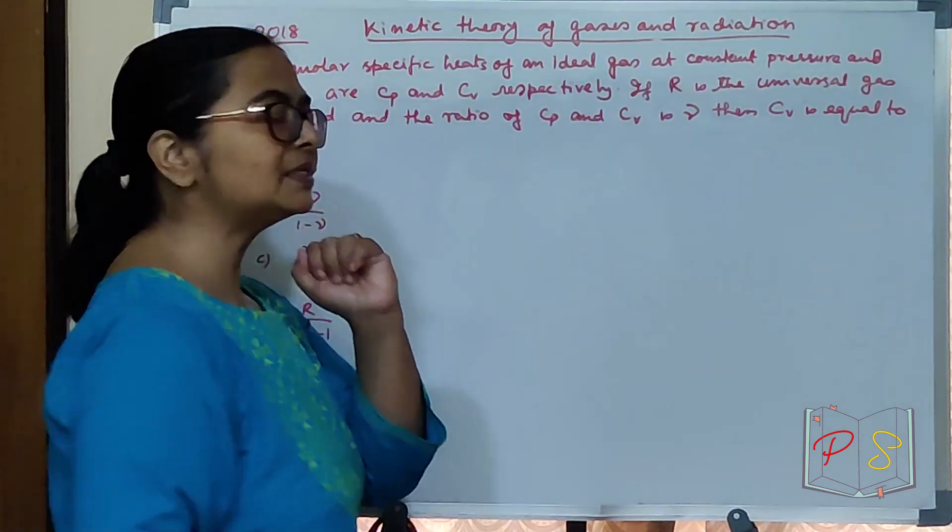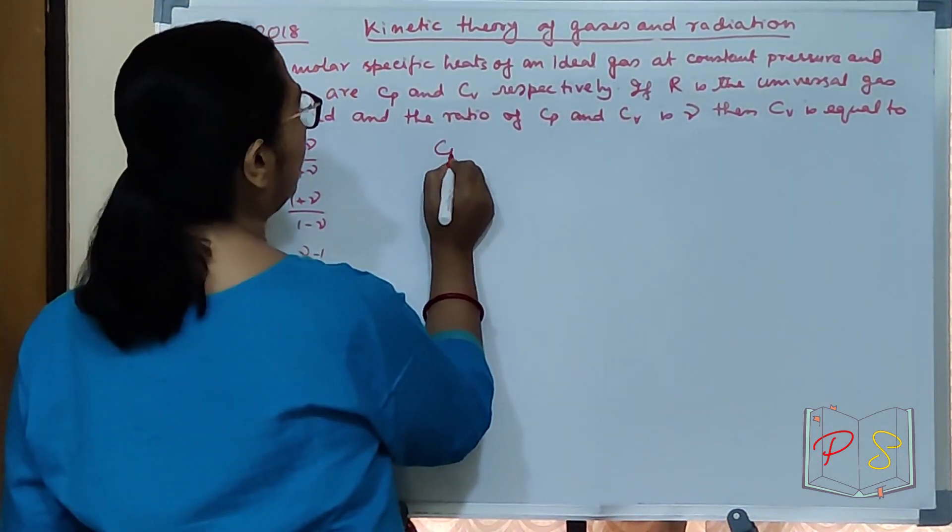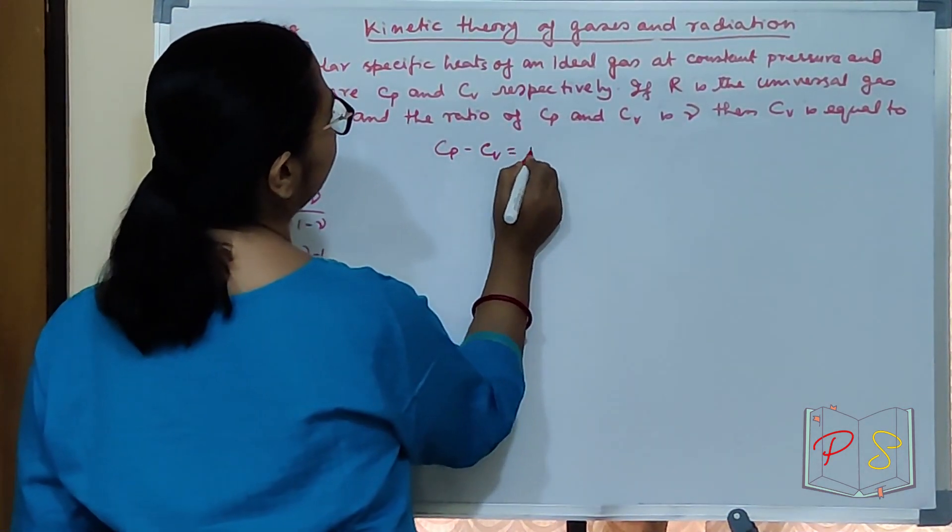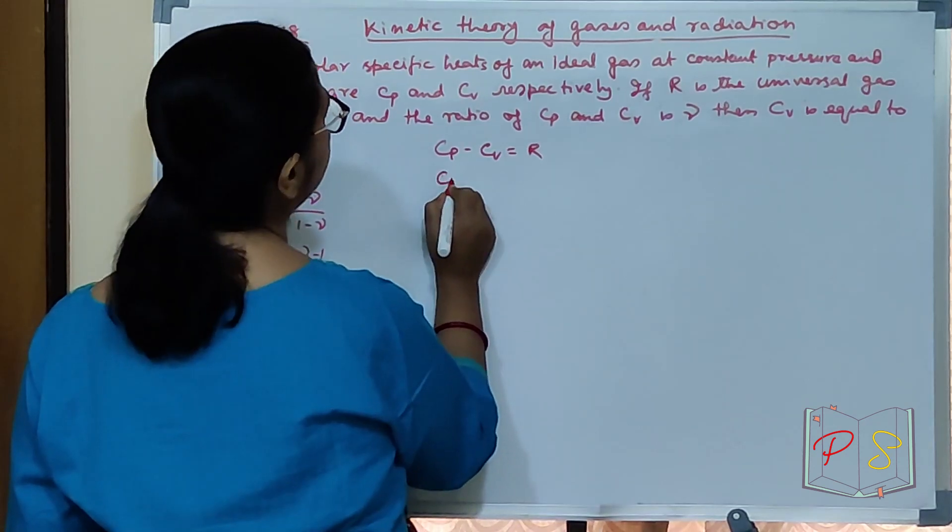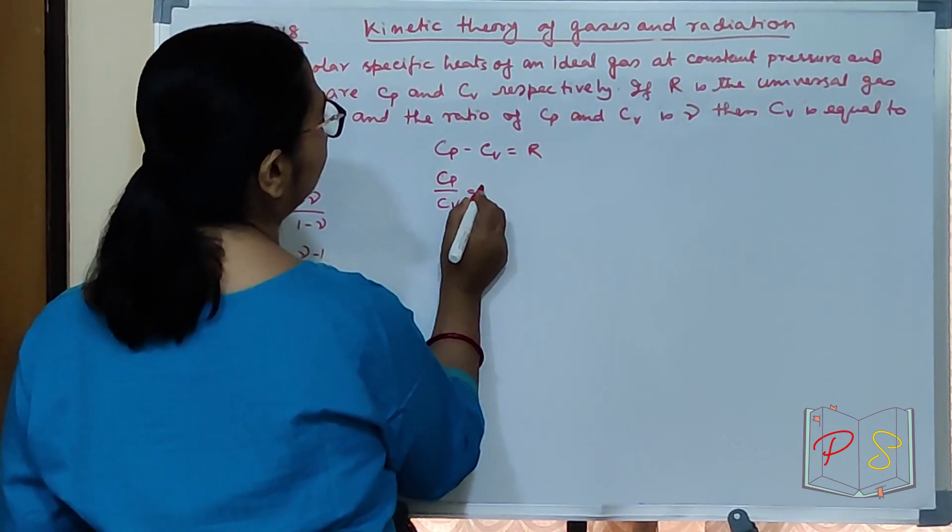Your two master formulas that you need to use are: Cp minus Cv equal to R, and Cp by Cv equal to gamma.